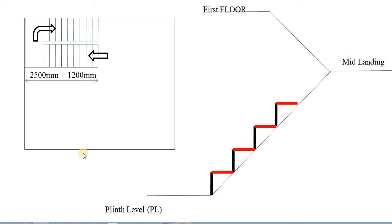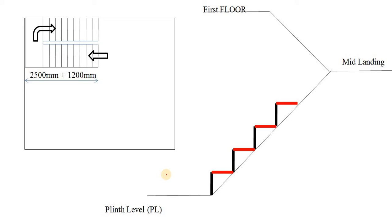A stair is a very important part of your building. The main function of a stair is to go to the upper floor from the lower one. As a civil engineer, you should know the different components of the stair, how a stair is designed, and what are the different methods to provide support. In this video, I will discuss the general arrangement, how the dimensions of a stair are fixed, and how the support of a stair is determined.